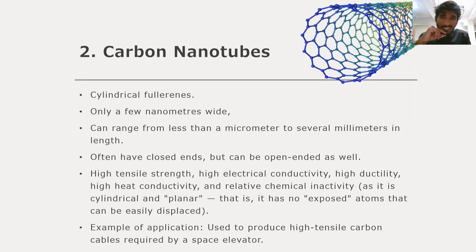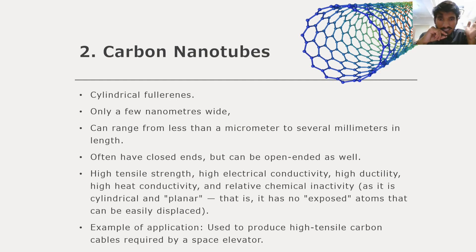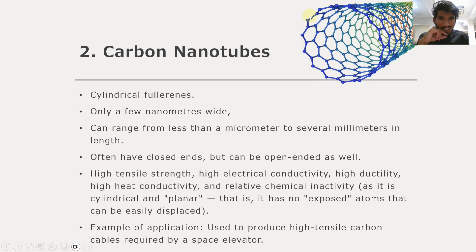The second major type of fullerene is the carbon nanotube. These are cylindrical fullerenes only a few nanometers wide, ranging from less than a micrometer to several millimeters in length. They often have closed ends but can be open-ended as well. They have high tensile strength, high electrical conductivity, high ductility, high heat conductivity, and relative chemical inactivity. Only the end atoms are exposed while inner atoms are not. An example application is producing high-tensile carbon cables required by space elevators.